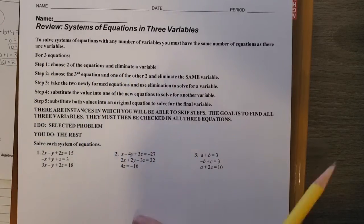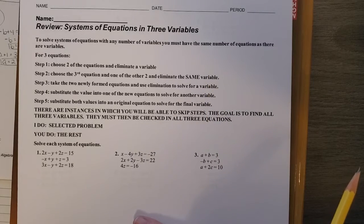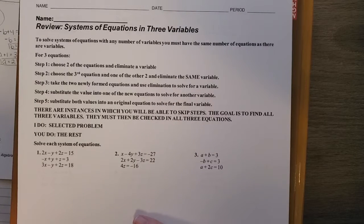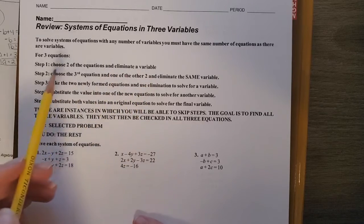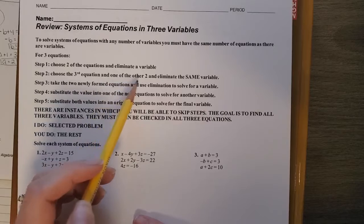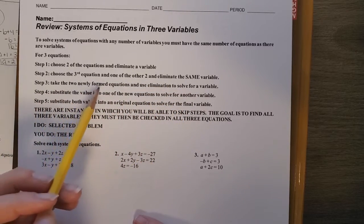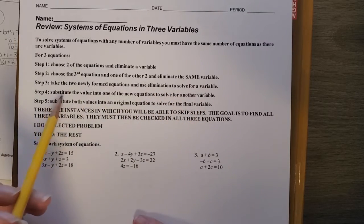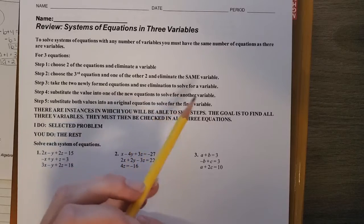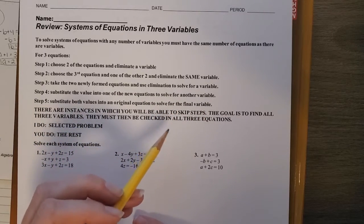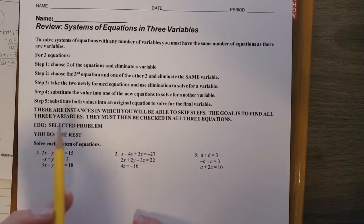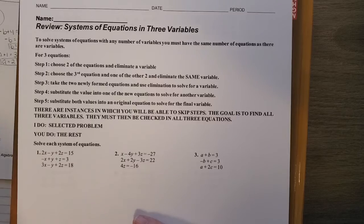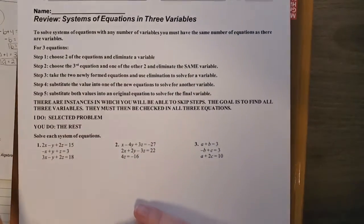To solve systems of equations with any number of variables, you must have the same number of equations as there are variables — four variables means four equations, three variables means three equations. The first step is to choose two of the equations and eliminate a single variable. Then choose the third equation and one of the other two and eliminate the same variable. Take the two newly formed equations and use elimination to solve for a variable. Substitute that value into one of the new equations to solve for another variable, then substitute both values into an original equation to solve for the final variable. There are cases where some steps will be skipped because a variable solves earlier. The goal is to find all three variables, and they must be checked in all three equations.